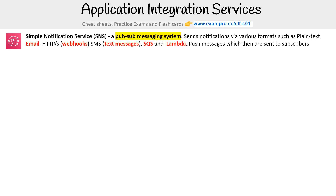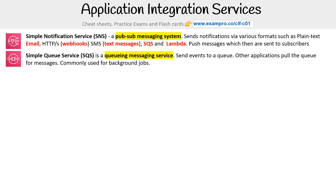The first is Simple Notification Service — SNS. This is a pub/sub messaging system that sends notifications via various formats such as plain text, email, HTTPS webhooks, SMS text messages, SQS, and Lambda. It pushes messages which are then sent to subscribers.